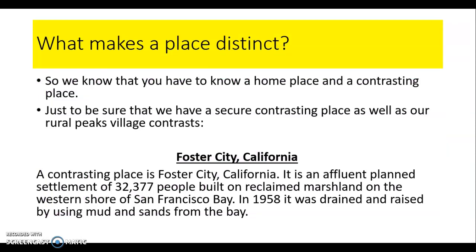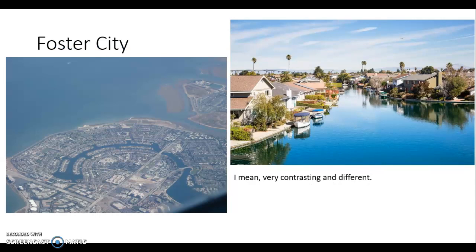Once you've understood the function of your local place, think about how you could contrast it to another place. In your notes you should have evidence of a place called Foster City in California. This is a contrasting place to where you live - it is a very specific and quite peculiar place. It's characterised by its population and is extremely affluent. It was a planned settlement built on reclaimed marshland just off the western shore of San Francisco Bay, and as you can see from the date - 1958 - it is a really newly built place.